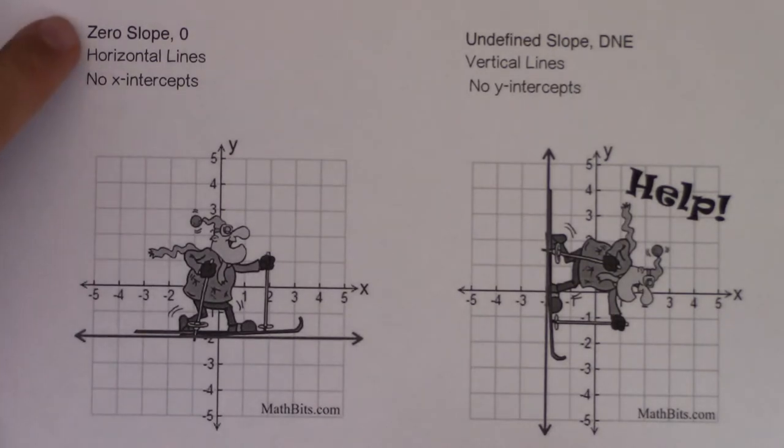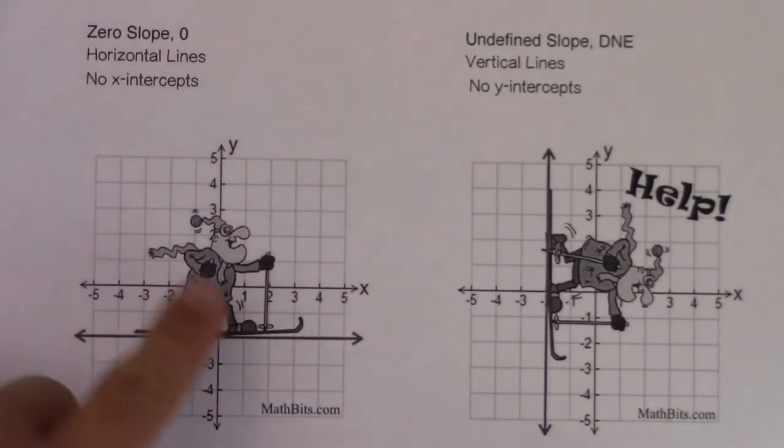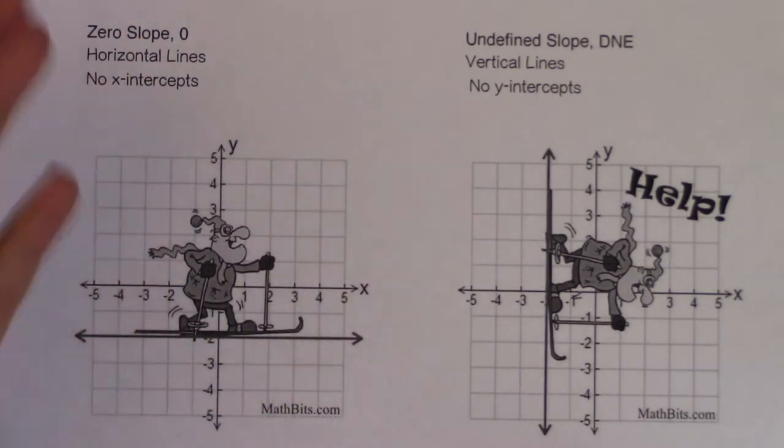But they have slopes that are zero, and they have no x-intercepts, right? So horizontal lines, slope is zero, and it never touches the x-axis.